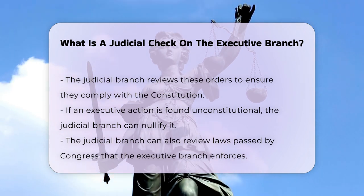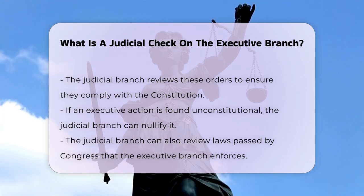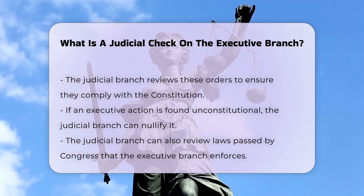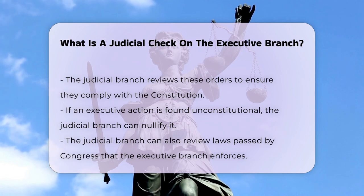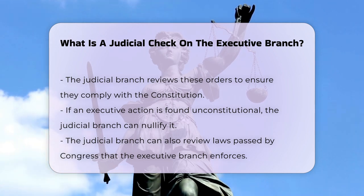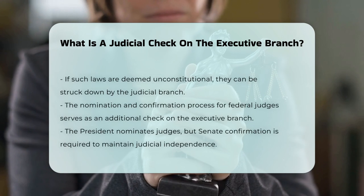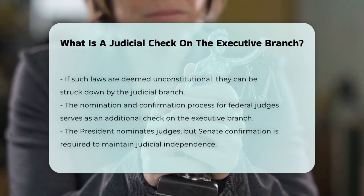Additionally, the judicial branch can also review laws passed by Congress that are enforced by the executive branch. If these laws are found to be unconstitutional, the judicial branch can strike them down, which in turn limits the executive branch's ability to enforce those laws.